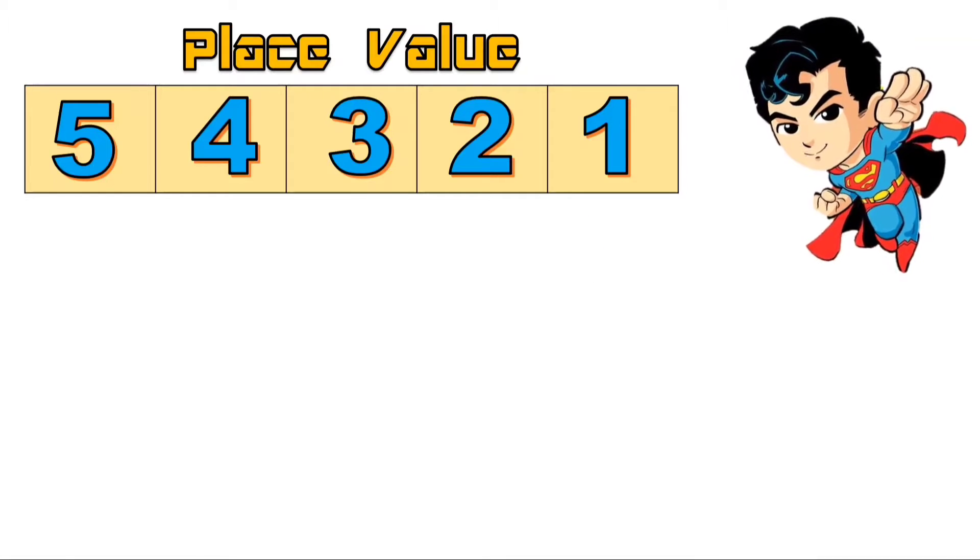I have here a five-digit number: 5, 4, 3, 2, and 1. Let's talk about the place value of each digit.